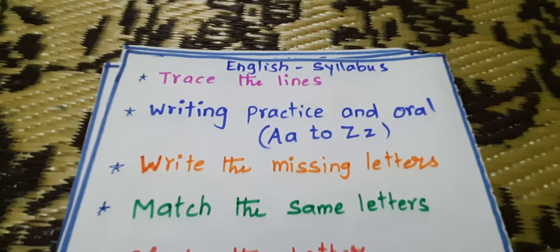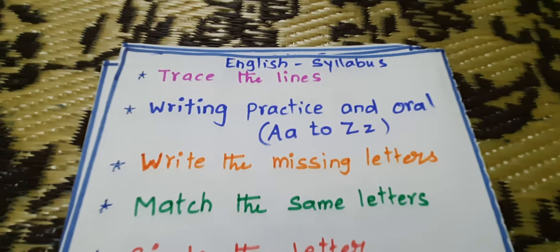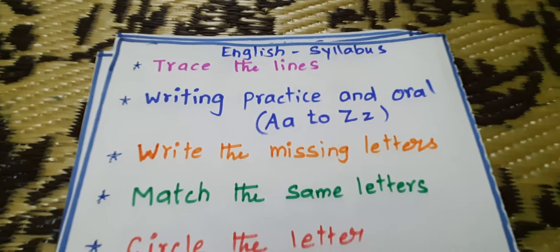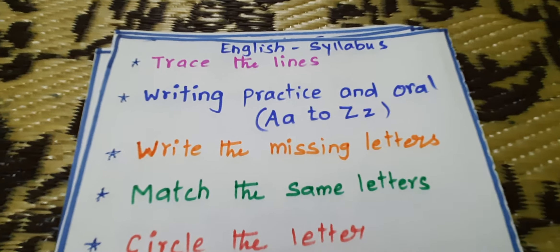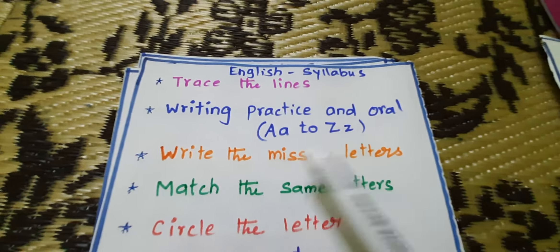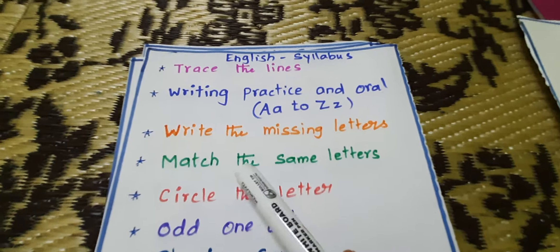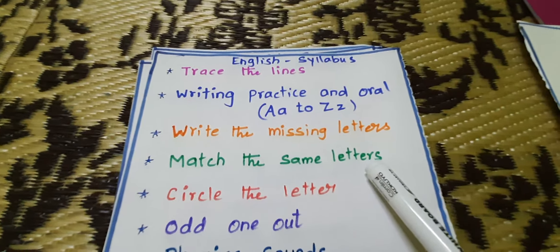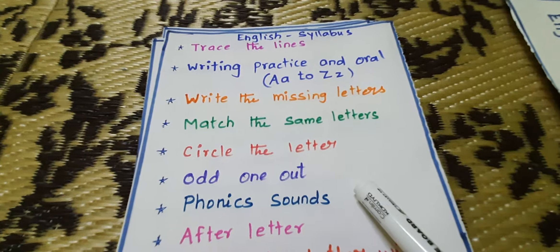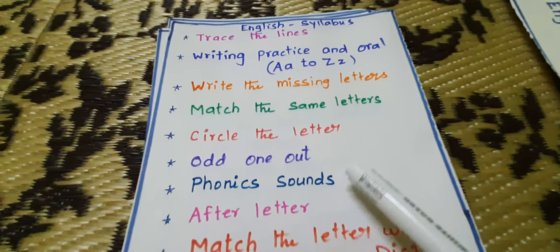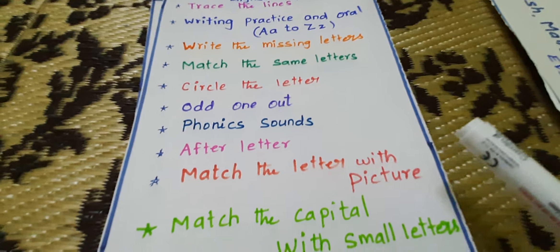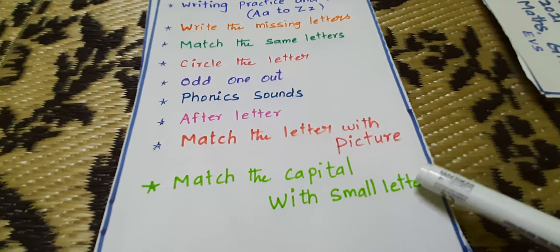English: trace the line. Writing practice and oral. A to Z capital and small letters. Then write the missing letters. Match the same letters. Circle the letter. Odd one out. Phonic sounds. After letter. Match the letter with pictures. Match the capital with small letters.